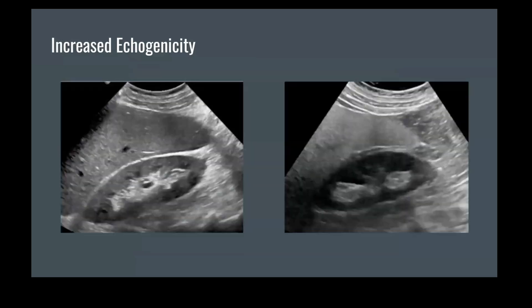Here's another example of the increased echogenicity. However, here we can actually compare the echogenicity to the kidneys. The left is a normal liver, and we can see that the echogenicity is pretty similar to the kidney. However, on the right image of the fatty liver, we can see that the liver has higher echogenicity than the kidney.